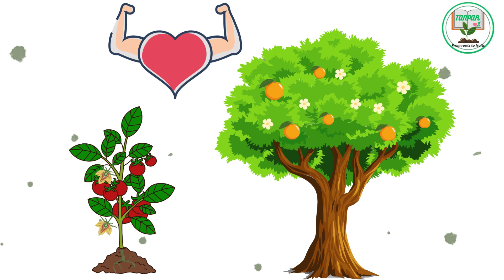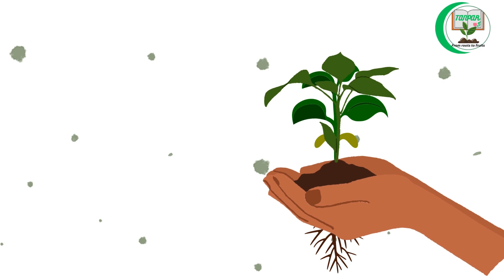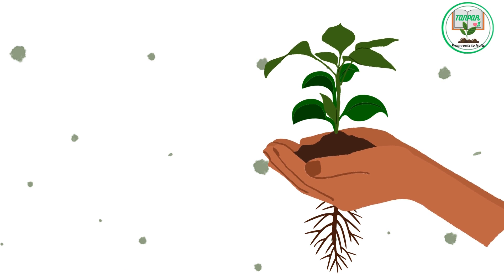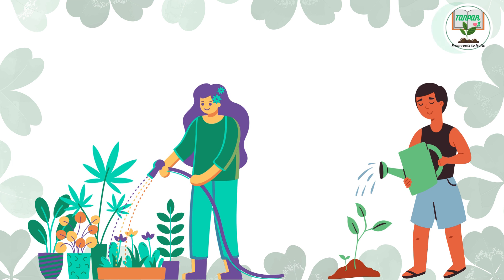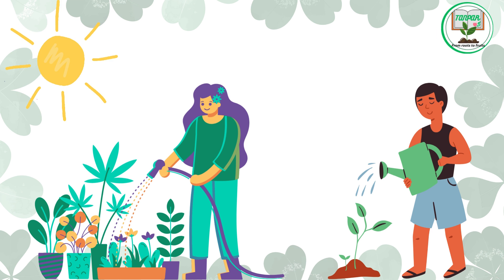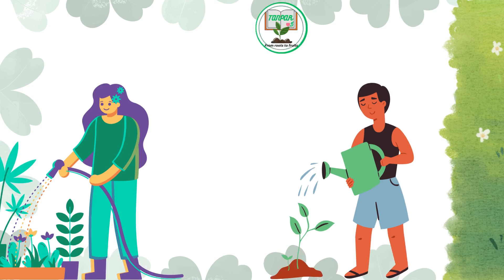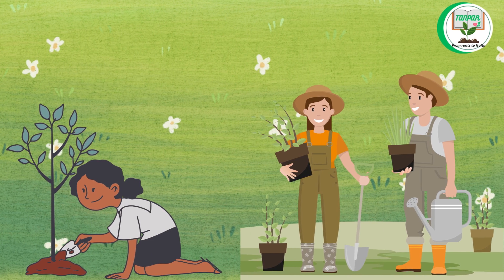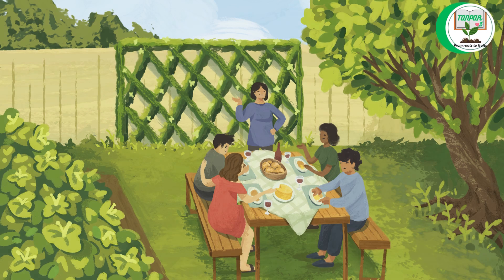Caring for plants and trees: plants and trees need care to stay healthy and grow properly. This includes watering them regularly, giving them enough sunlight, and protecting them from pests and diseases. Planting trees and gardens helps to beautify our surroundings and support the environment.